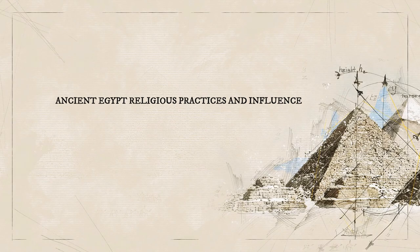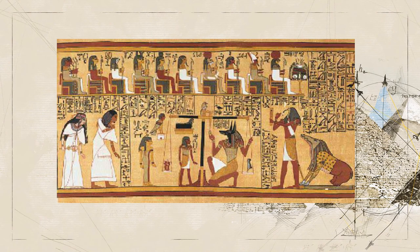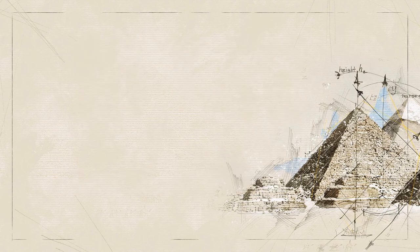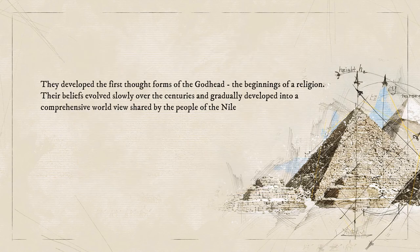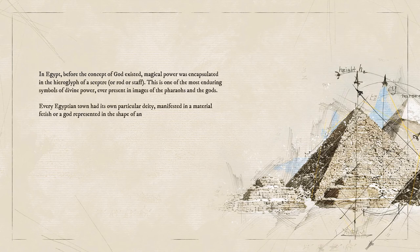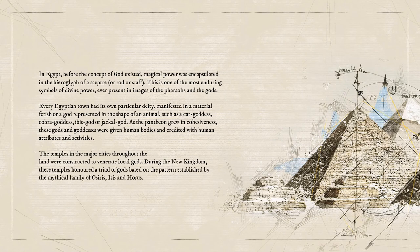One of the most interesting aspects of ancient Egypt is religion. The depth of Egyptian thinking and the rich imagination displayed in the creation of ideas and images of gods and goddesses are beyond compare. In elaborating their beliefs, the Egyptians were working on a cosmic plane, searching for an understanding of the most basic laws of the universe. They developed the first thought forms of Godhead, the beginning of a religion. In Egypt, before the concept of God existed, magical power was encapsulated in a scepter or god-staff. This is one of the most enduring symbols of divine power, ever present in images of the pharaohs and the gods.